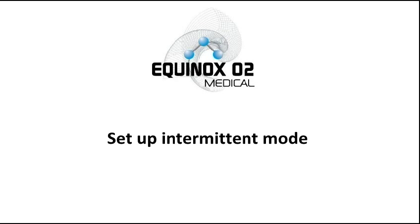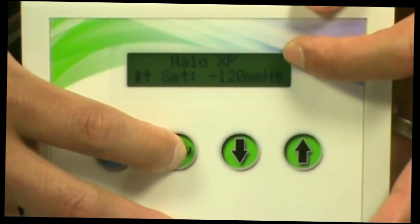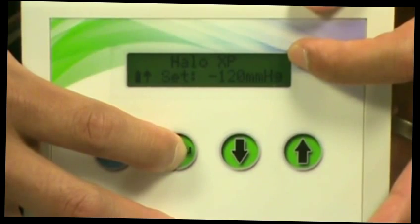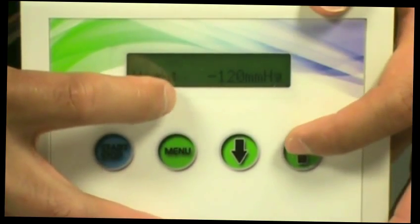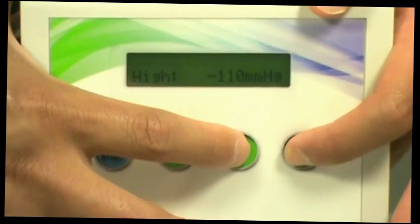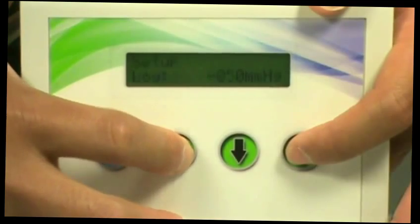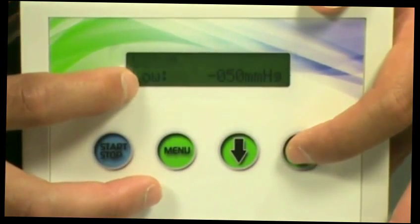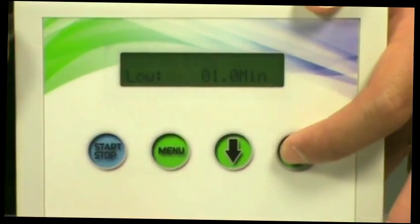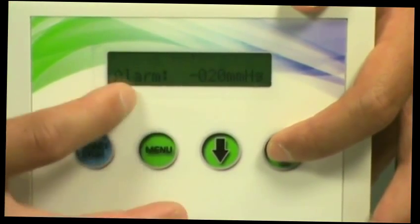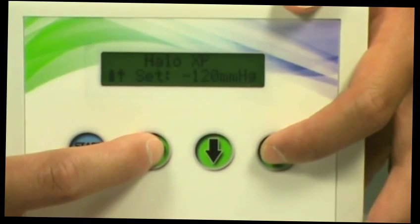Set up intermittent mode. Press and hold the menu button for five seconds or until you've reached the first menu option. And here you'll be able to set up your high pressure setting. Press menu for the time, set up for one minute. Low pressure setting, set up for negative 50. And set up for time as well, and that's for one minute. Set up your pressure tolerance alarm. Alarm on, delay alarm off.